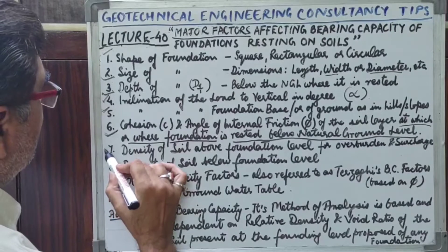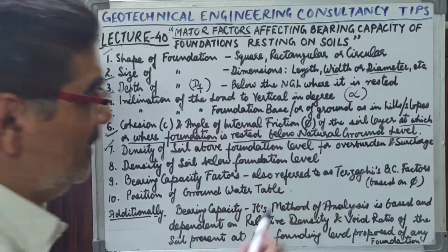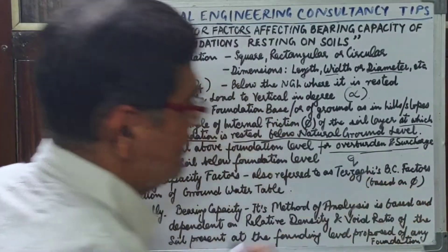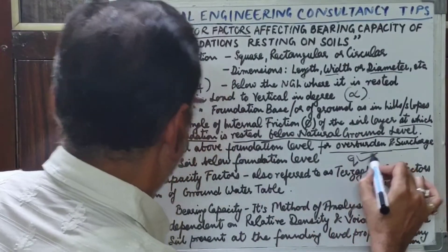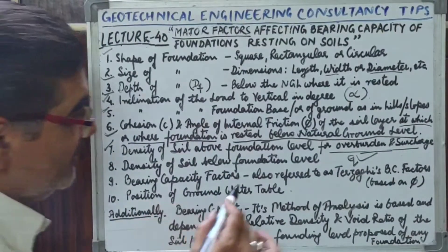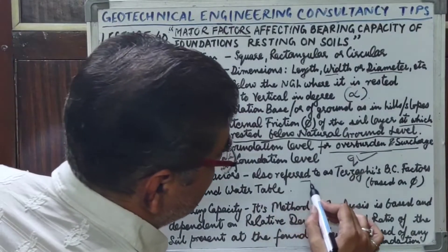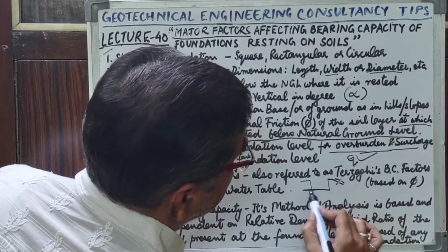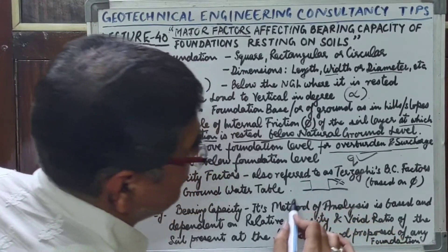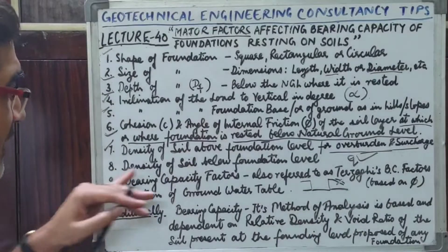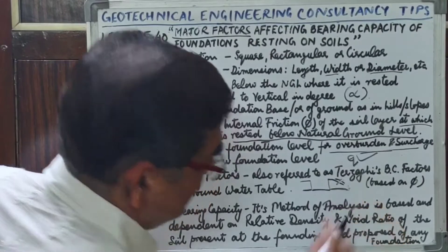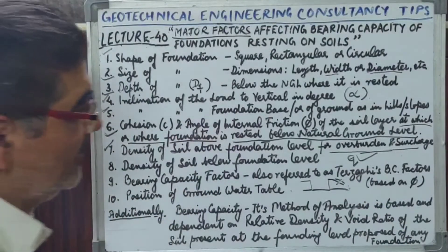Next, the density of soil above the foundation level is used for calculating overburden and surcharge. The density of soil below the foundation level is the location where shear forces act — where soil fails in shear. So the density of soil below the foundation level is relevant at that particular founding location.